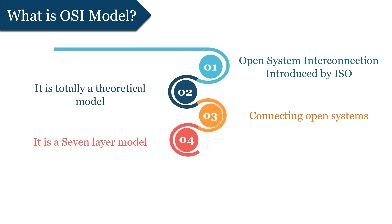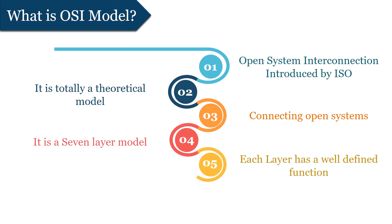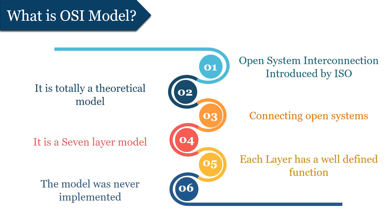It is a seven-layer model that includes application layer, presentation layer, session layer, transport layer, network layer, data link layer, and physical layer. Each of the layers has a well-defined function that we'll discuss in the slides ahead. As it is a theoretical model, it was never implemented to establish a network.